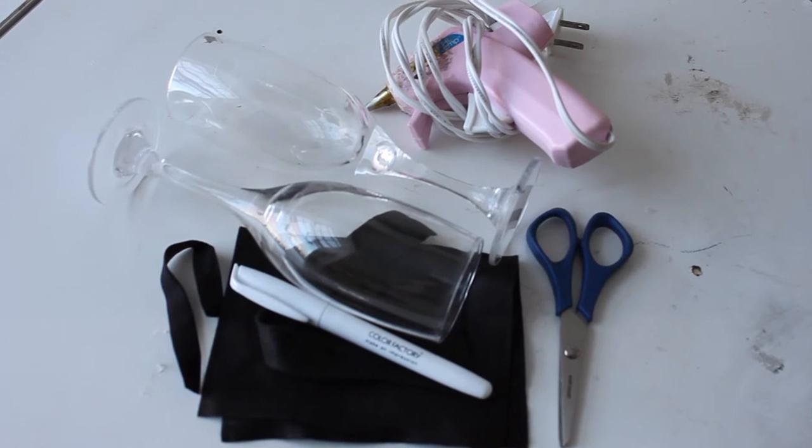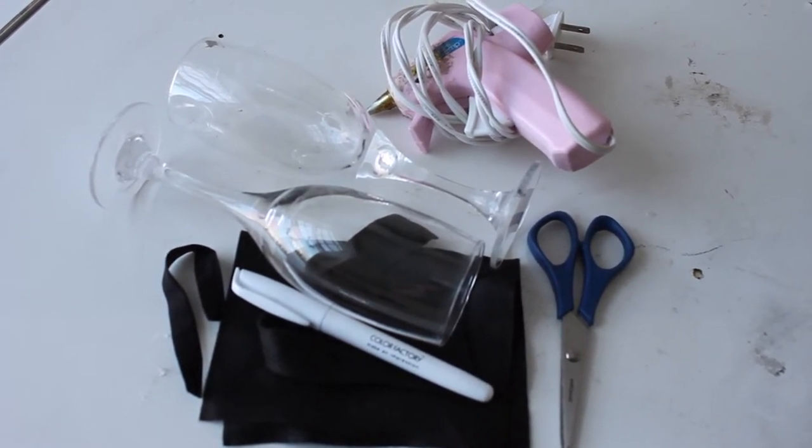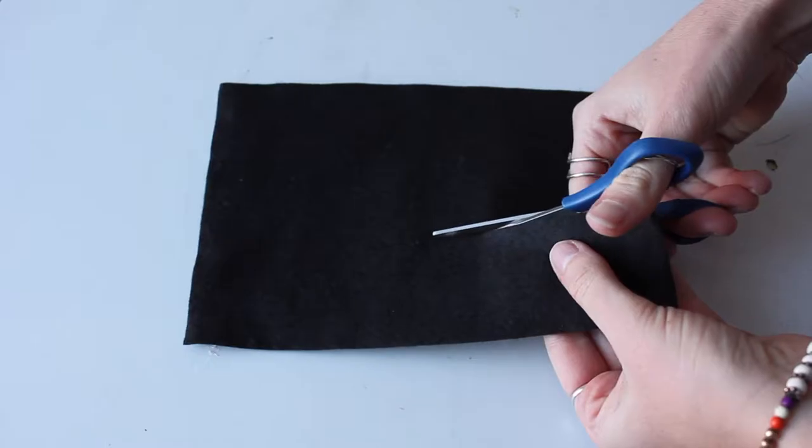So you're going to need your glasses, a hot glue gun, scissors, some black felt, a black stretchy elastic, and then I'm also using a glass paint marker for the first time.